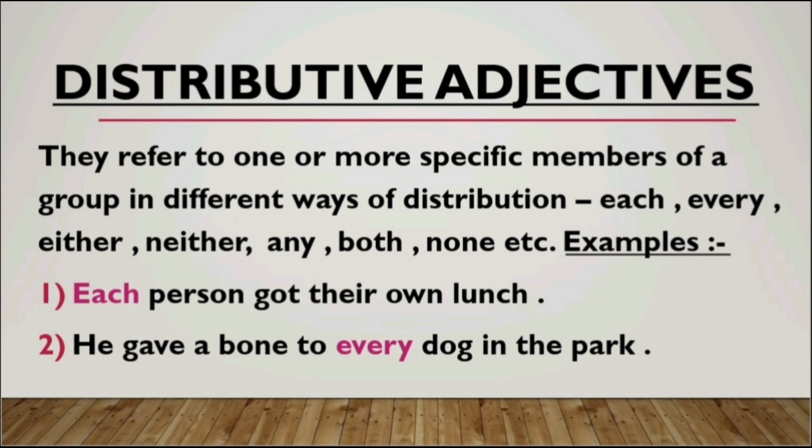The examples of distributive adjectives are: each, every, either, neither, any, both, none, etc. Have a look at these examples. First: "Each person got their own lunch." Here, 'each' refers to the individual group of people receiving the lunch box, so each person individually received the lunch box. That's what a distributive adjective is all about.